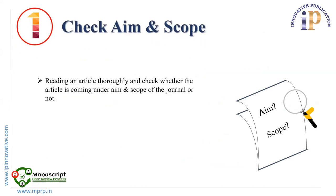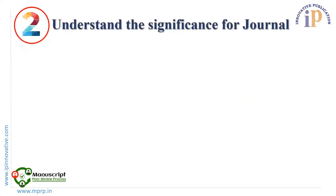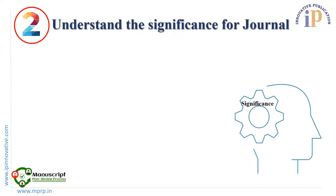Number one — check aim and scope. Start by reading the article thoroughly and check whether the article falls under the aim and scope of the journal or not. This is a very basic thing a reviewer must check.